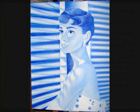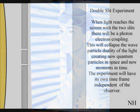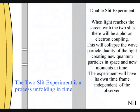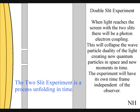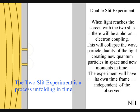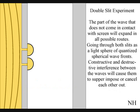When the waves reach the screen with the two slits, they will react with the electrons of the screen. This will collapse the wave particle duality of the light, creating new quantum particles in space and new moments in time. The part of the wave that does not come in contact with the screen will expand in all possible routes, going through both slits as two wave fronts.